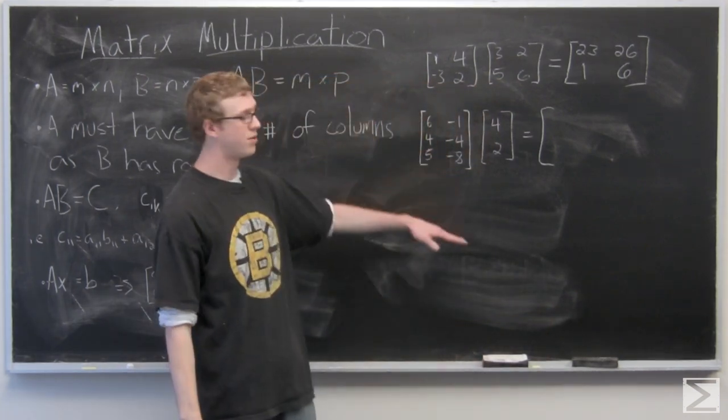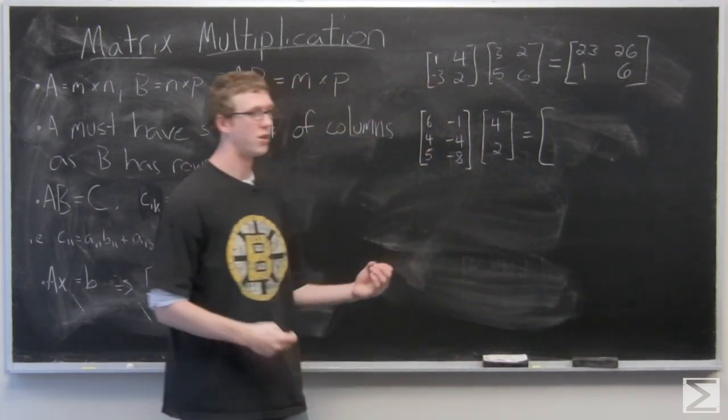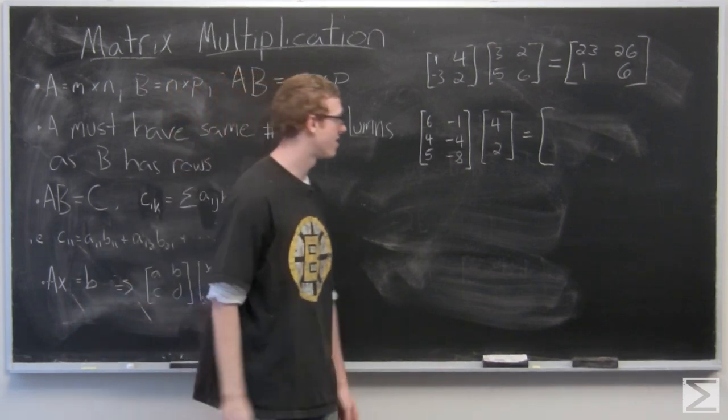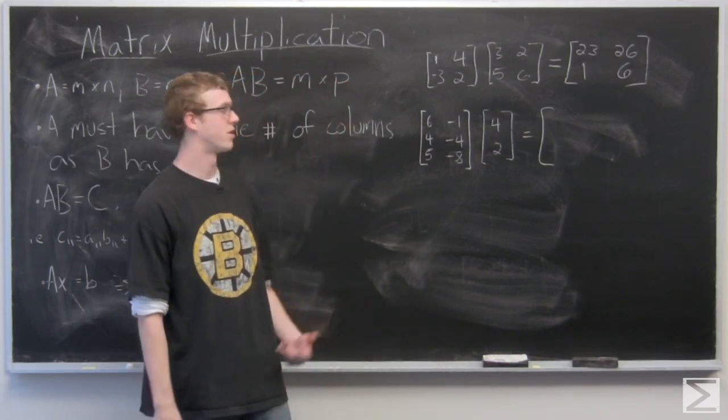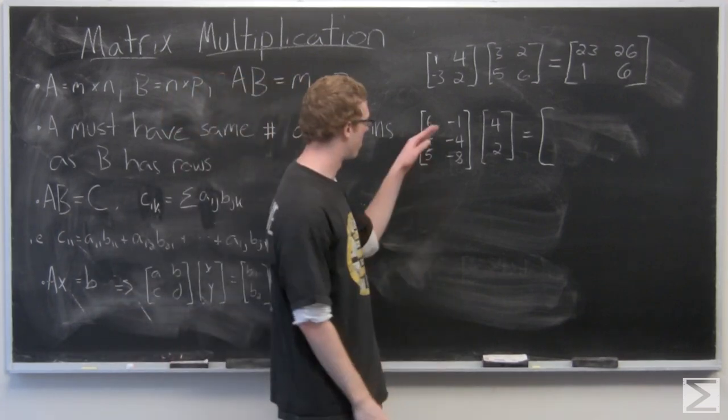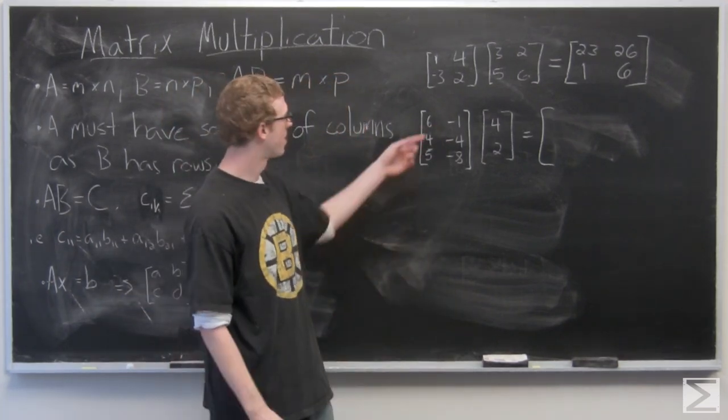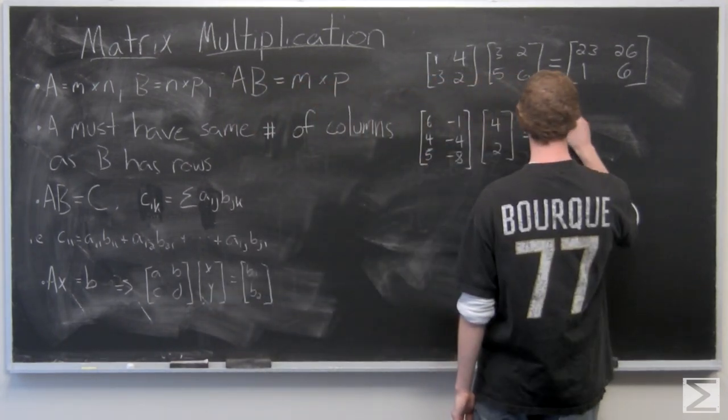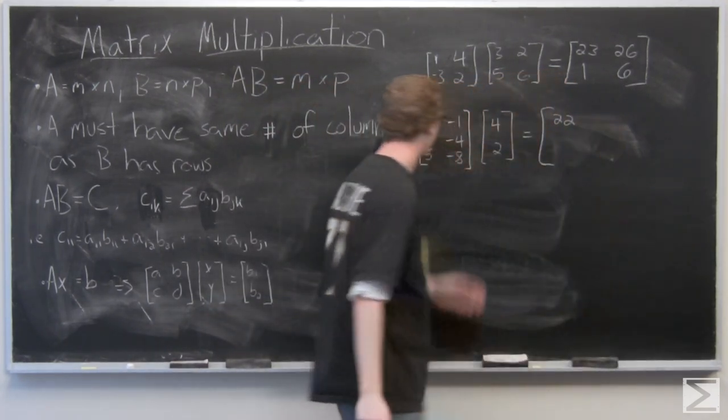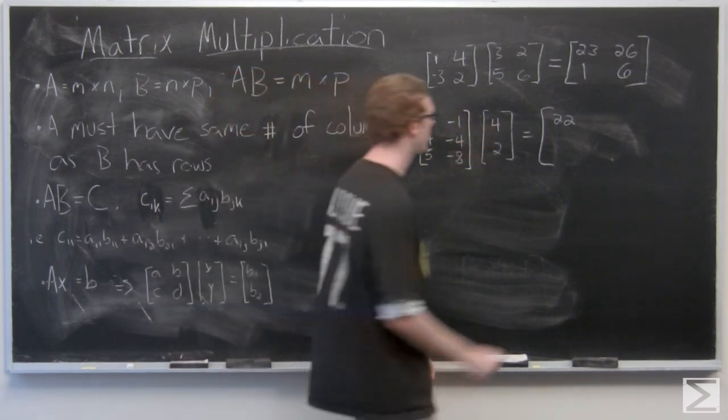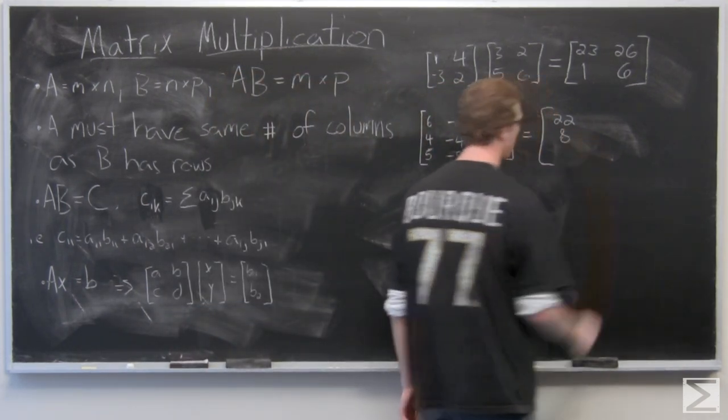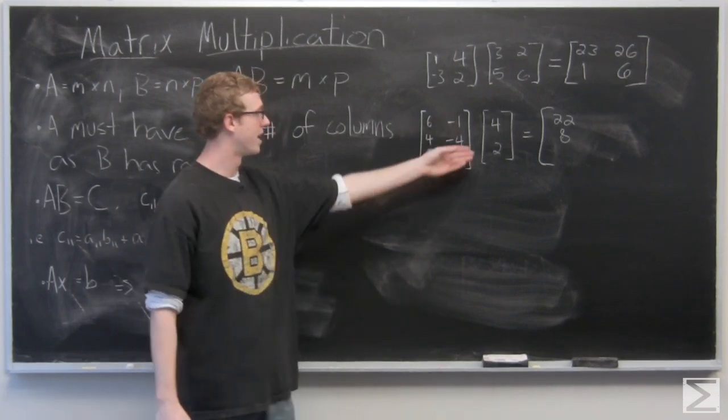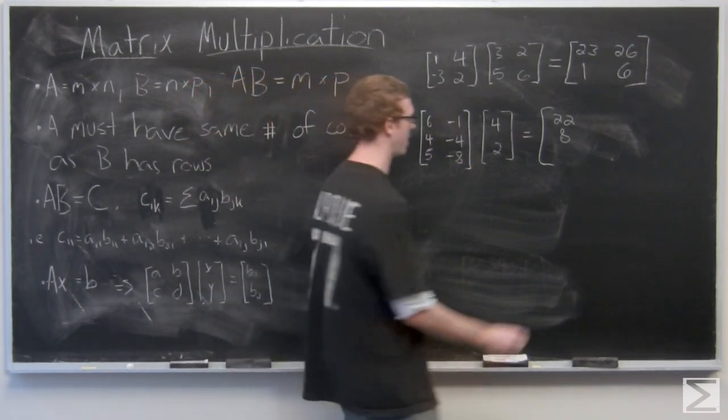So we have a 3x2 and a 2x1. We can multiply these matrices together and it's going to result in a 3 by 1 matrix. So let's start off and just multiply this through: 6 times 4 negative 1 times 2, 4 times 4 and negative 4 times 2 add to make 8, and 5 times 4 and negative 8 times 2 add to make 4.